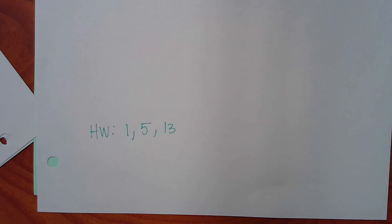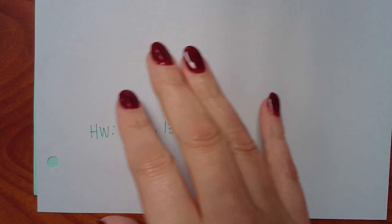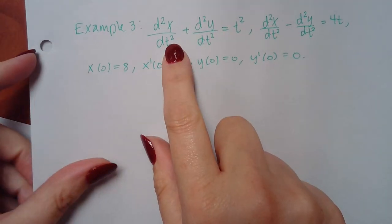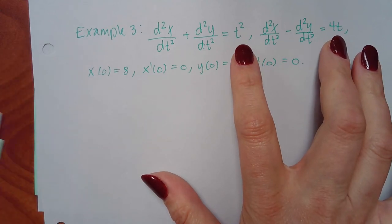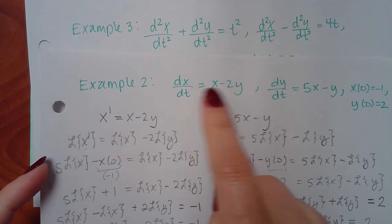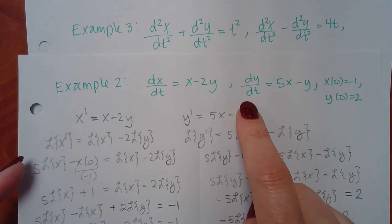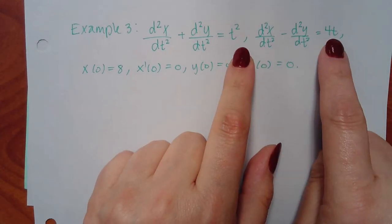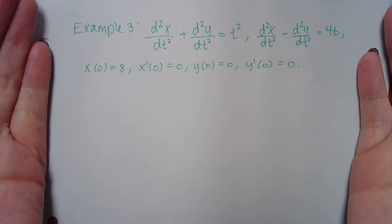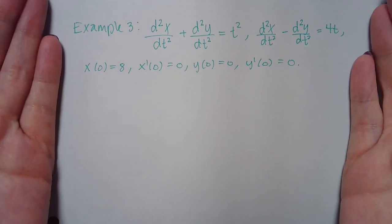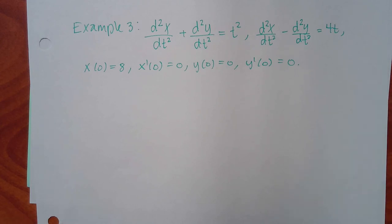The next example we'll cover before the review involves double primes on both equations plus a non-zero function on the right-hand side — it might not necessarily be 0 like it was in these examples. So when you Laplace it, you'll have something over there already instead of just zero. It's like examples 1 and 2 put together. I want to cover that example first, then go over the review next class. The following Tuesday, a week from today, is when we'll have the test.